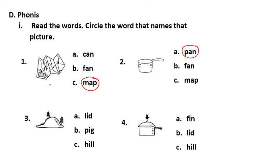Number three. This is a picture of a hill. A, lid, B, pig, C, hill. The word I'm looking for is C, hill.